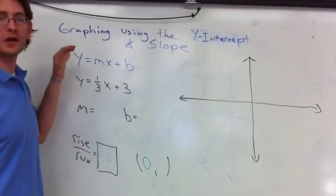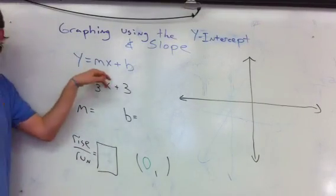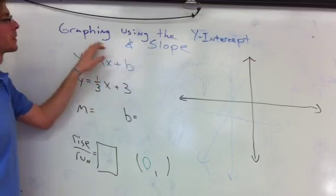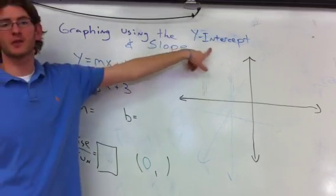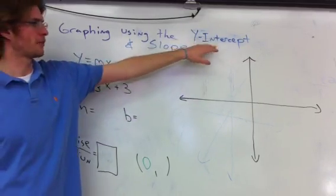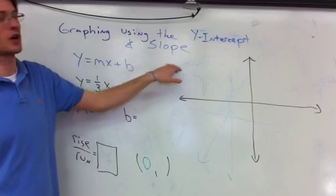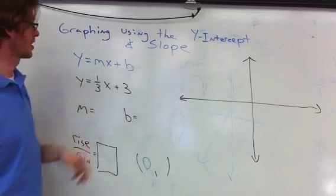Okay, this time we're going to be graphing equations that are in y equals mx plus b form, but we're going to be doing it using our knowledge of the y-intercept and slope. You need a place to start and then a direction to go. The y-intercept is the place to start, the slope is the direction to go.